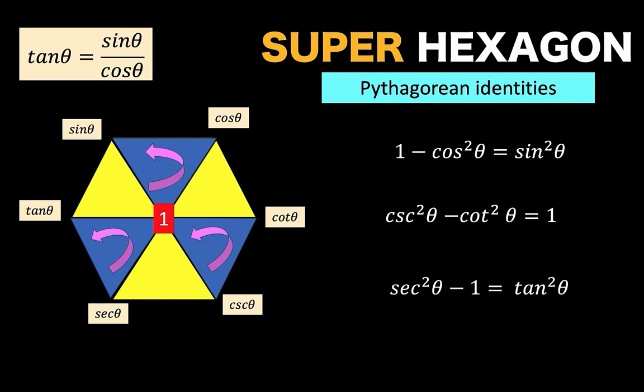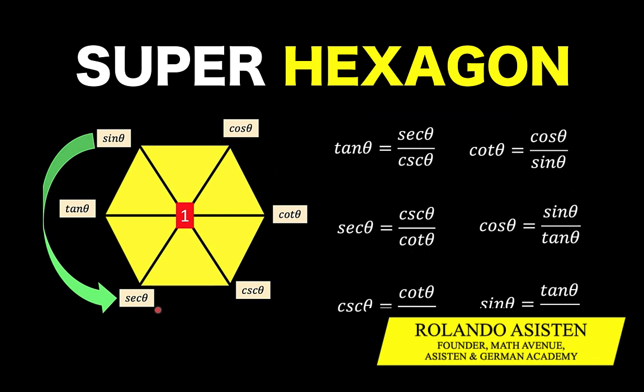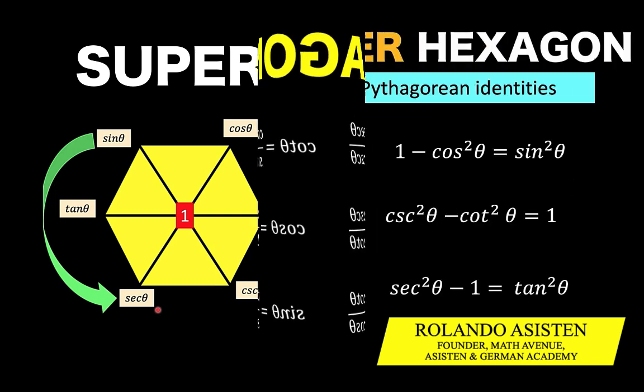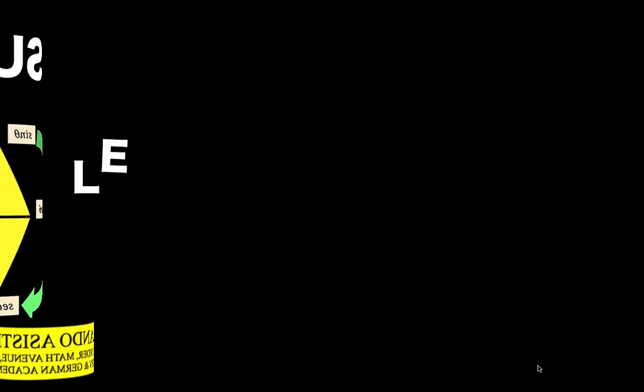So far, we have generated more than 30 trigonometric identities without memorizing those identities. And the secret is this super hexagon.